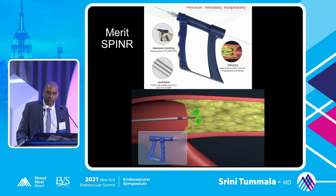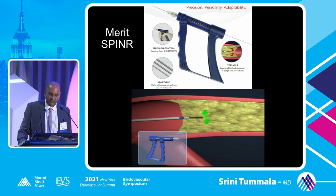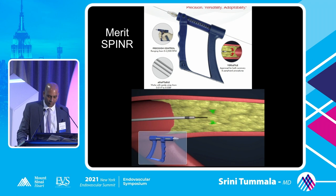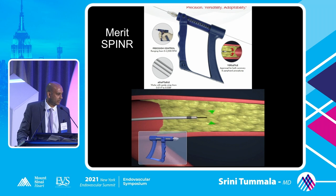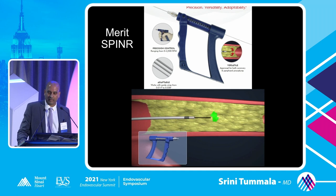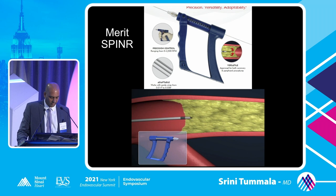The Merit Spinner Catheter spins a guide wire at 2,500 RPMs, letting you drill through a CTO — very similar to the drilling technique described in the literature where you rotate a guide wire with a torque device as rapidly as possible. This works for all guide wire platforms from 0.014 to 0.038.